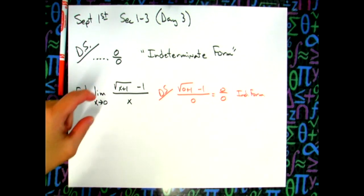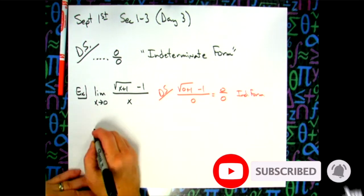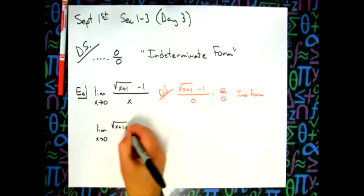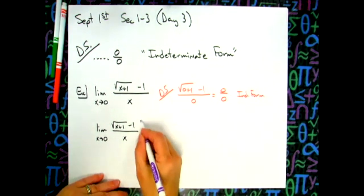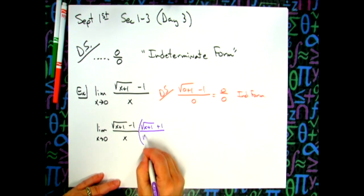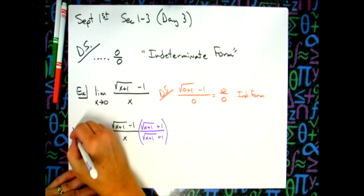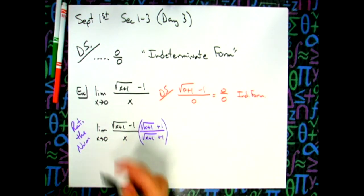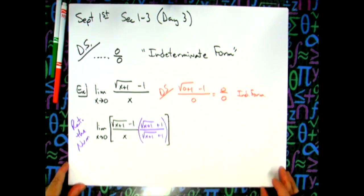I'm going to rationalize the numerator, keeping the limit notation in front of every line, because everything I'm doing now is just algebra. So I rewrite the limit as x approaches zero of square root of (x+1) minus 1, all over x, and then multiply by the conjugate — square root of (x+1) plus 1 — over itself. That's rationalizing the numerator.